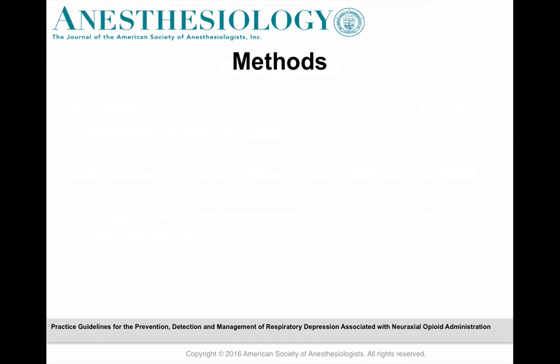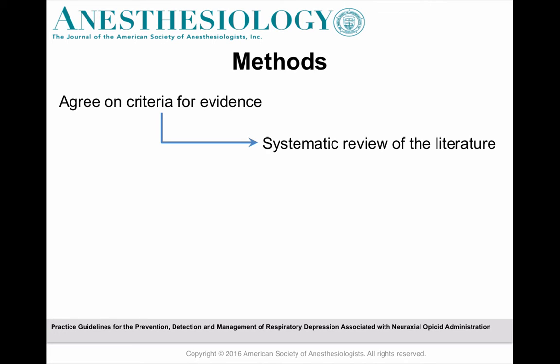How are practice parameters developed? First, the American Society of Anesthesiologists collaborates with organizations whose members have specific expertise, and they team those experts with two methodologists who are expert in systematic reviews. They agree on criteria for the evidence they'll review, and then a systematic review of the literature is undertaken.